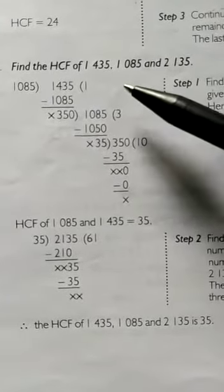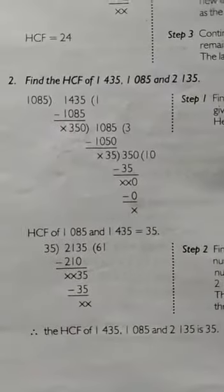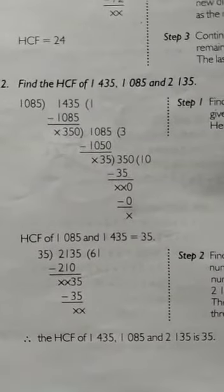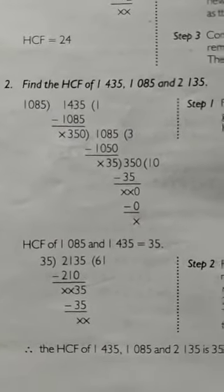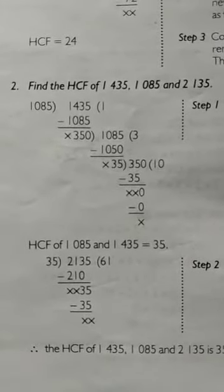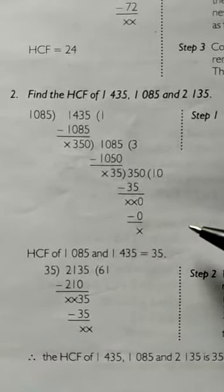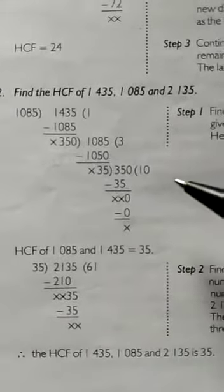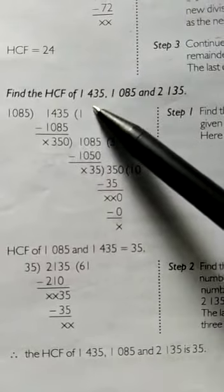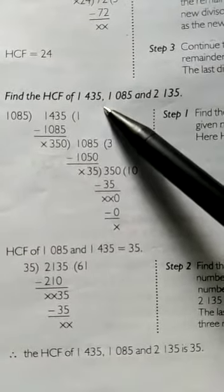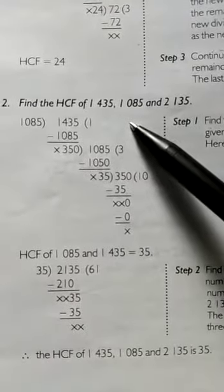Example 2: find the HCF of 1435, 1085, and 2135. We have three numbers here. In Step 1, recognize the smaller number and the nearest greater number. Firstly, we find the HCF of 1435 and 1085.